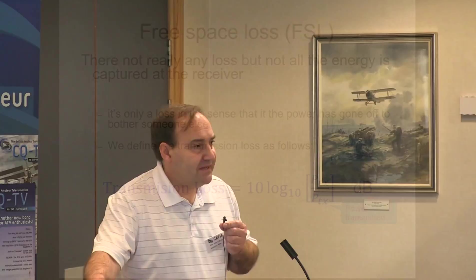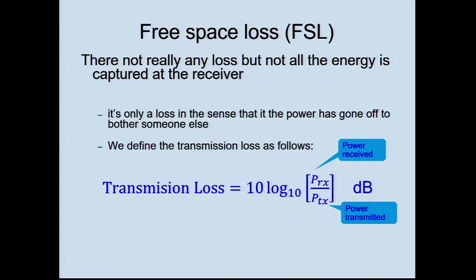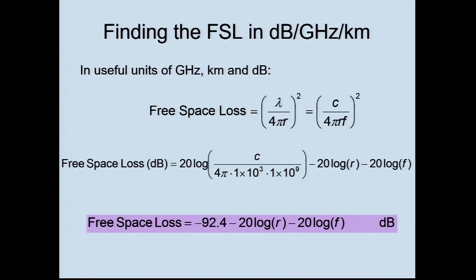We often come across a thing called free space loss. Free space loss is not actually a loss — it's only a loss in the sense that the transmitter power has gone off to bother somebody else. We define that loss in decibels as the ratio of the received power to the transmitted power. There's a very simple equation in decibels: 92.4 minus 20 log of the distance minus 20 log of the frequency, where distance is in kilometres and frequency is in gigahertz. That gives you the free space path loss.